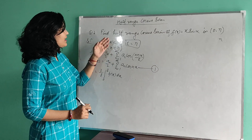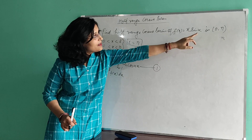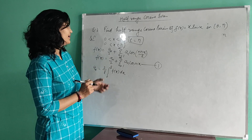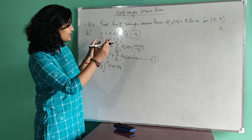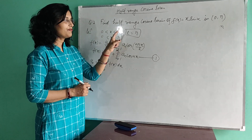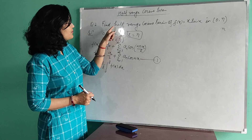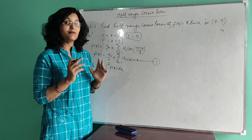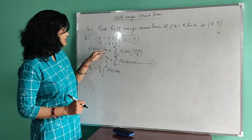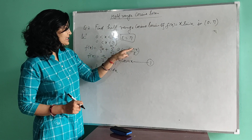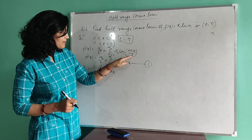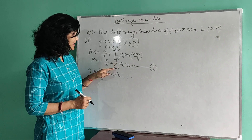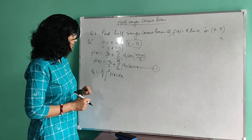Let's discuss the half range cosine series of the function x·sin(x) on the interval 0 to π. Step 1: find l. The main interval is 0 to l, and the given interval is 0 to π, so by comparing, l = π. Since half range cosine series is asked, we write: f(x) = a₀/2 + Σ(n=1 to ∞) aₙ·cos(nx), where π/π cancels.